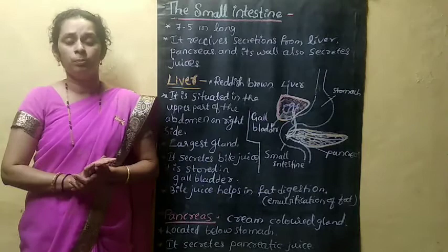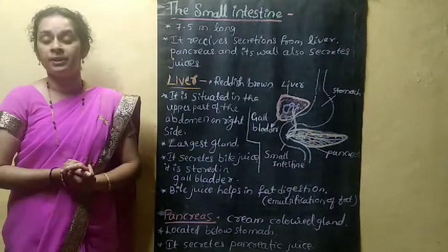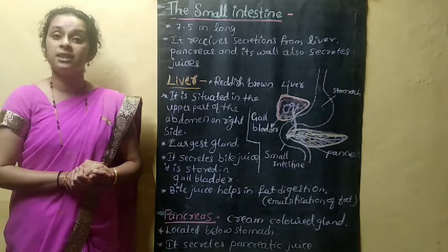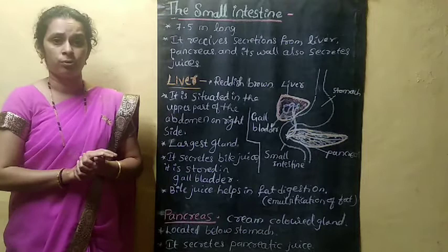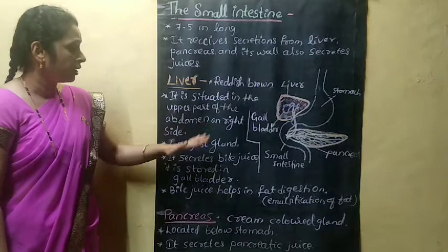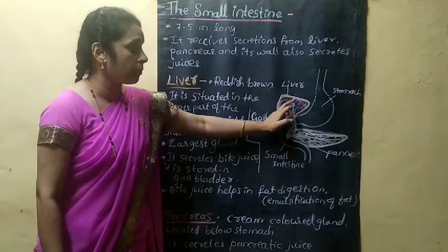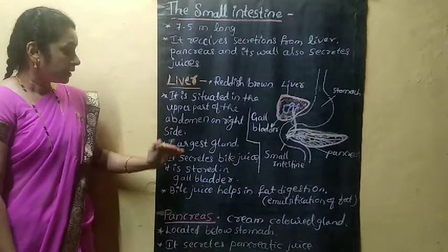The liver is the largest gland in the human body and it is a reddish-brown colored gland. While drawing the human digestive system you will draw the liver also. It is situated in the upper part of the abdomen on the right side. Abdomen means the stomach region, and the liver is situated at the upper right part of that region.